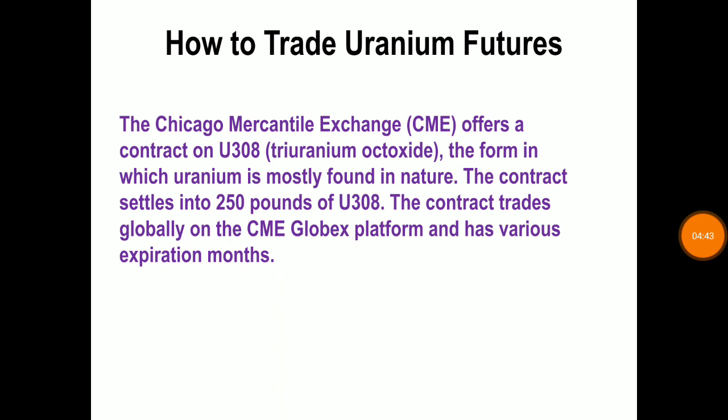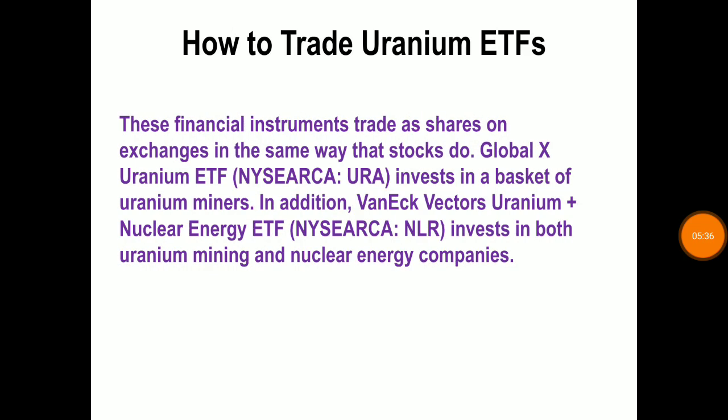Now let us look at how to trade uranium futures. The Chicago Mercantile Exchange offers a contract on U3O8, the form in which uranium is mostly found in nature. The contract settles into 250 pounds of U3O8 and trades globally on the CME Globex platform, with various expiration months. Futures are a derivative instrument through which traders make a leveraged bet on commodity prices. If the price declines, the trader must deposit additional margin to maintain their position. At expiration, these contracts are financially settled. Investing in futures requires a high level of sophistication since factors such as storage costs and interest rates affect pricing.